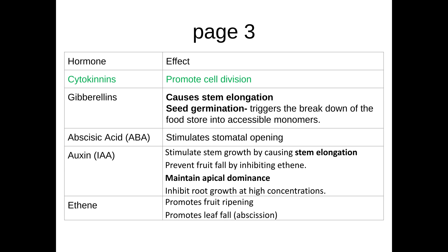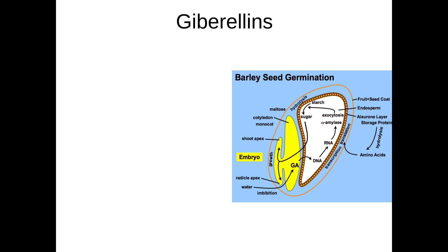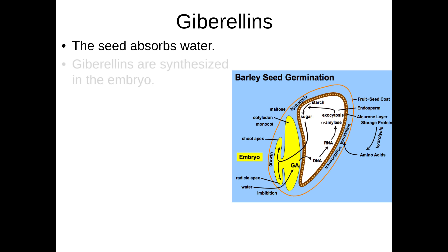The next one we need to be aware of is gibberellins. Gibberellins cause stem elongation but also seed germination, and this is how it works in terms of seed germination. First of all, the seed absorbs water and this causes gibberellins to be made within the embryo.